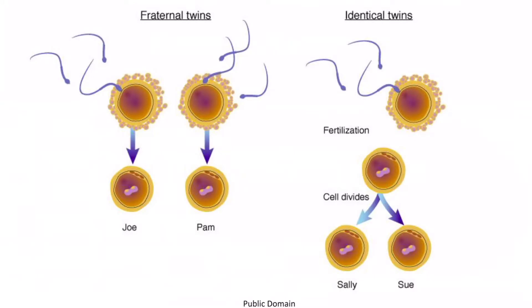This image helps show the difference between dizygotic, or fraternal twins, and monozygotic, or identical twins. The image on the left shows two different eggs being fertilized by different sperm, whereas the image on the right shows one egg being fertilized by one sperm and then dividing, leading to monozygotic twins.